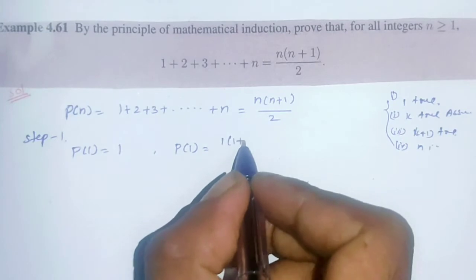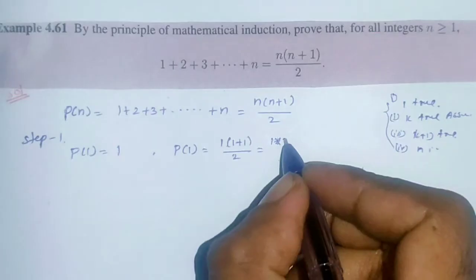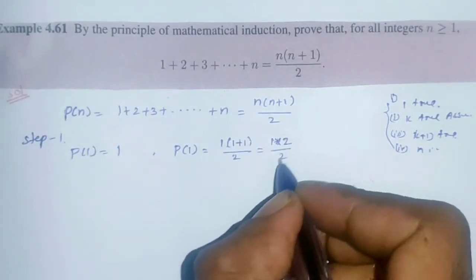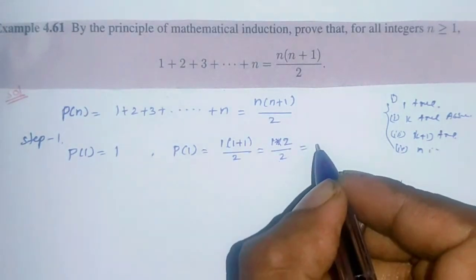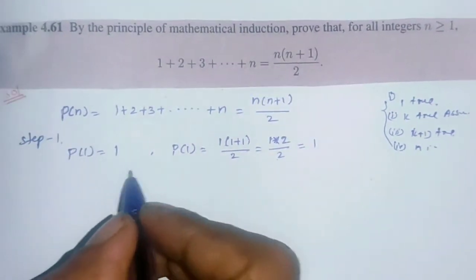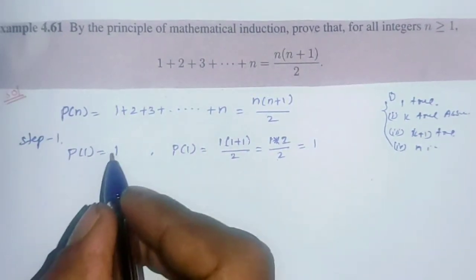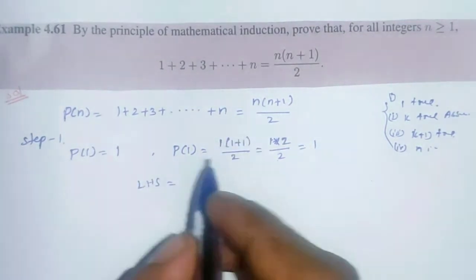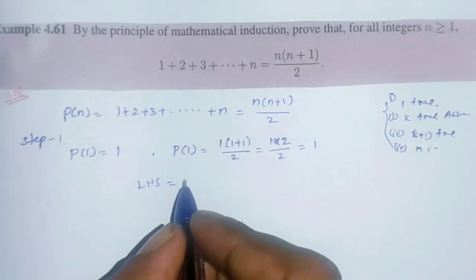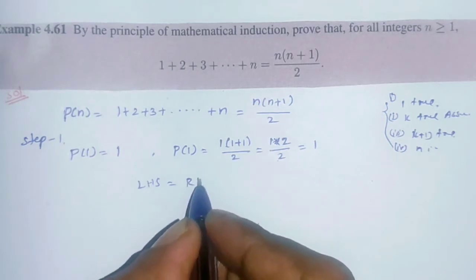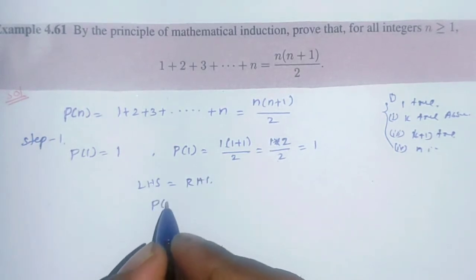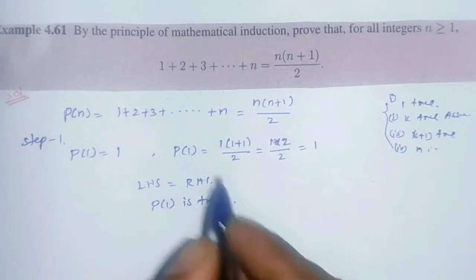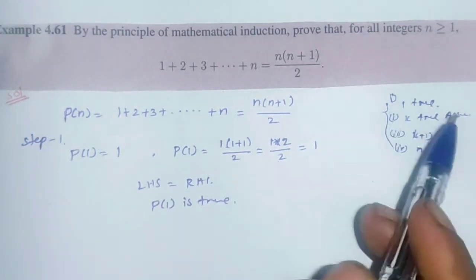RHS = 1 × (1+1)/2 = 1 × 2/2 = 1. LHS = 1 and RHS = 1, so LHS = RHS. Therefore P(1) is true. Step 1 is proved.